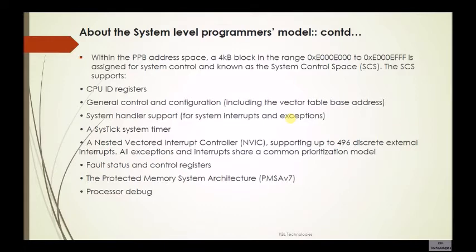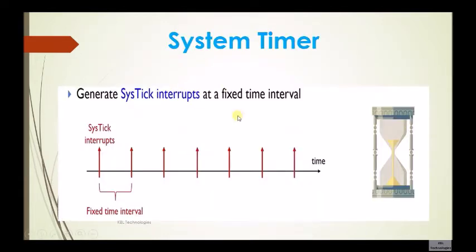Within the PPB address space, a 4KB block is allocated for the System Control Block (SCB), including the vector table base address, system handlers, and the SysTick system timer. The SysTick is a hardware timer implemented in the processor core — it is a 24-bit down counter with a reload register that generates an exception when the reload value reaches zero. Software can also generate a SysTick exception. In an OS environment, this exception can be used as the system tick, for implementing delay functions, CPU scheduling, or periodic task execution, and can also be used to measure elapsed time.